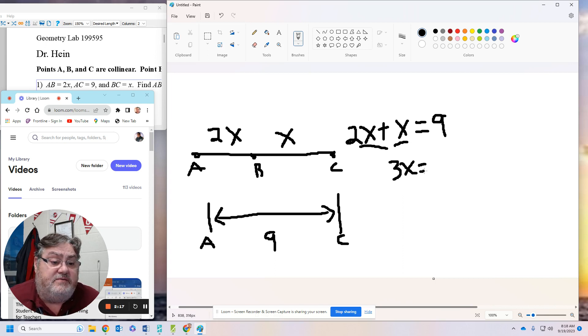I'm now going to divide both sides by the coefficient of X. So I'm going to divide both sides by 3. 3 divided by 3 is 1, or that's 1X. 9 divided by 3 is 3.